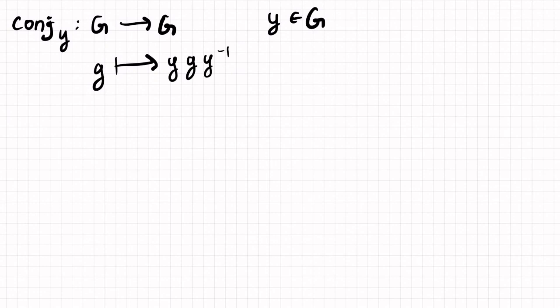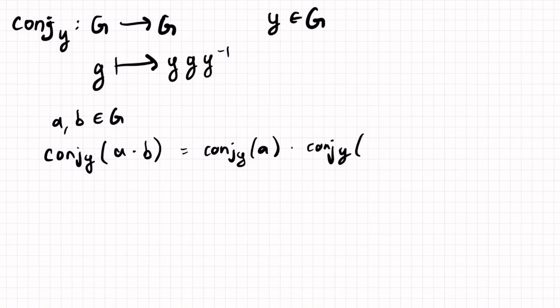And so this is going to be a homomorphism because, well, so let's see, let's take a and b in g. And we need to see that conj y of a times b equals conj y of a times conj y of b. And so if we expand this side's definitions, what we'll get is y, a y inverse, y times y, b, y inverse.